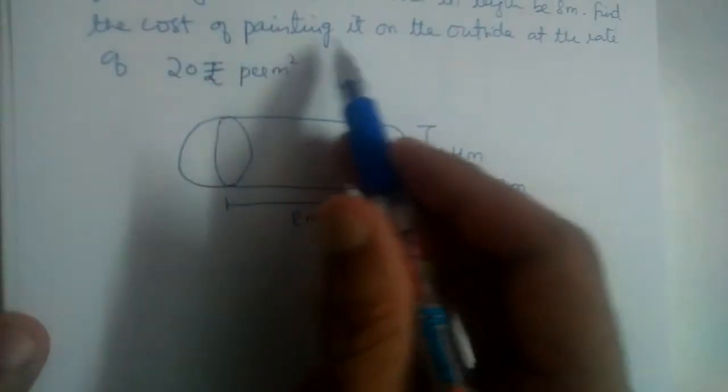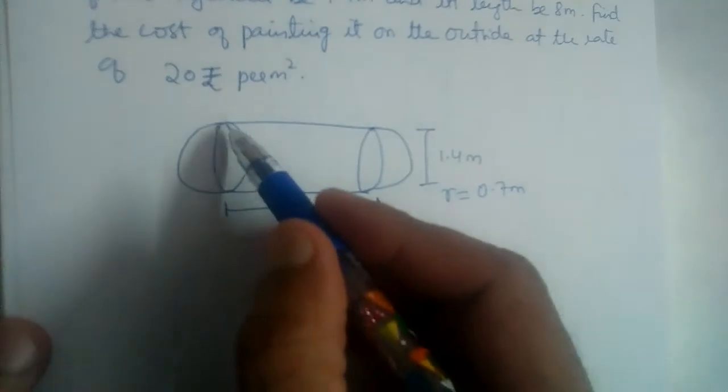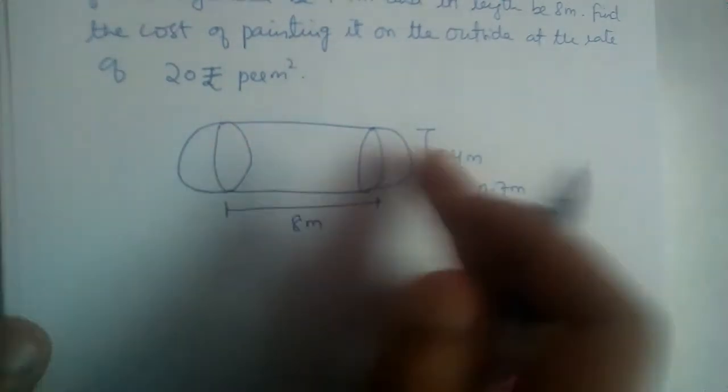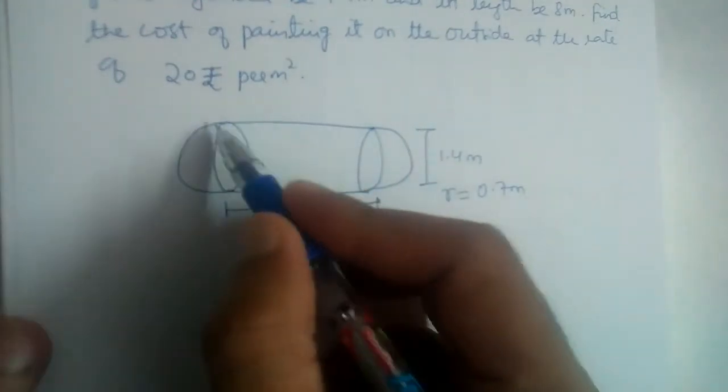Find the cost of painting it on the outside at the rate of 20 rupees. Now we need to find surface area of this solid, of this cylinder. Of the tank, surface area of the tank.